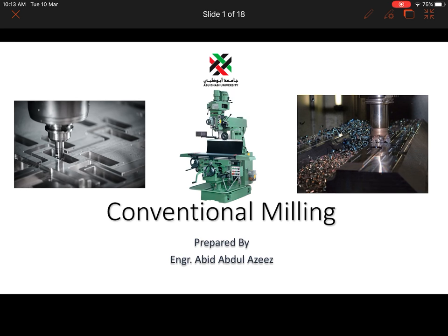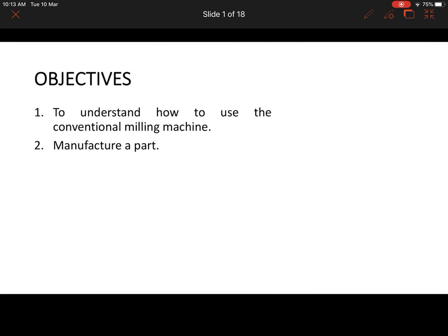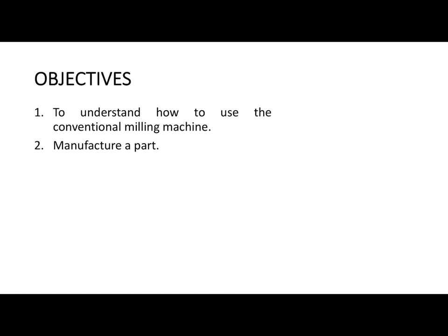Salaam alaikum everyone. Today I'm going to start with Experiment 2, which is called conventional milling. Our objective of the experiment is to understand how to use the conventional milling machine, and later we will manufacture a part.